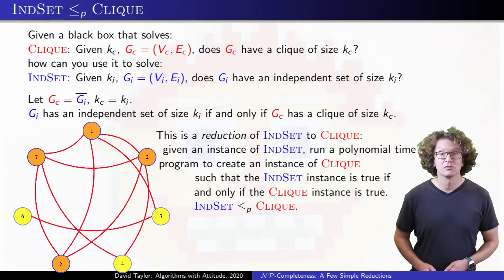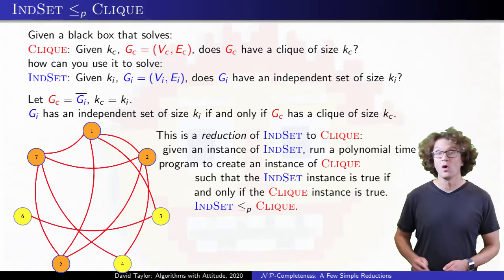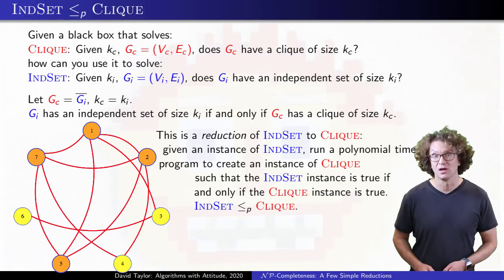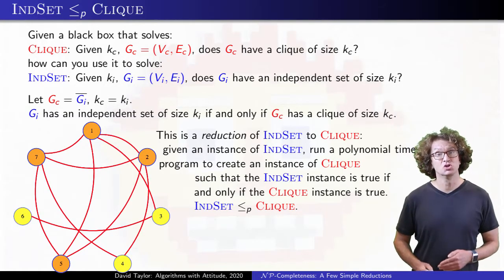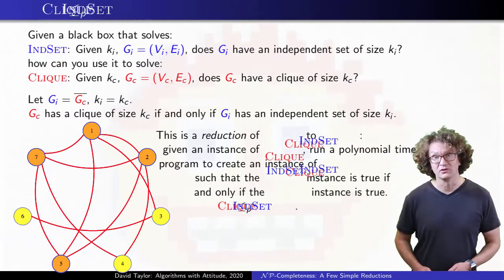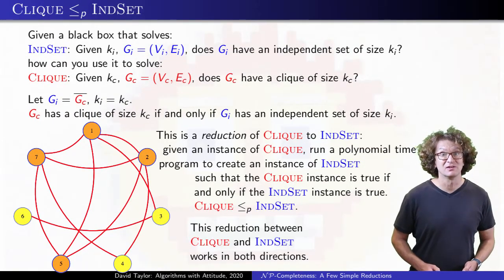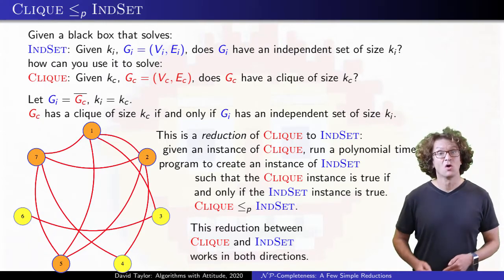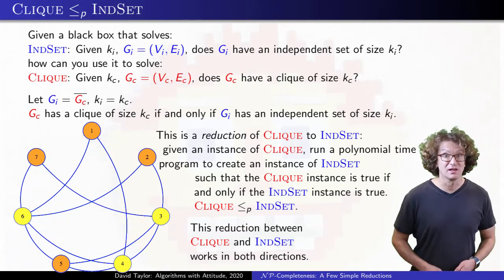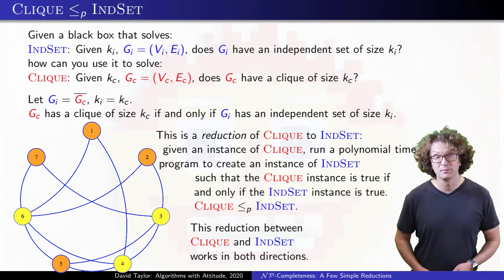The P denotes that we are allowed to take polynomial time to transform an instance of one problem into an instance of the other. One thing that this reduction has that is a bit unusual is that it works both ways. The same transformation that changes the independent set instance into a clique instance also reduces a clique instance into an independent set instance, because the complement of a clique is an independent set.